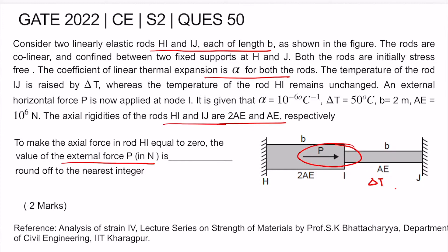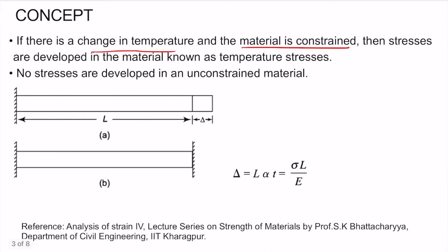Whenever there is a change in temperature and the material is constrained, stresses are developed in the material — these are known as temperature stresses. No stresses are developed in an unconstrained material. Suppose there is a bar of length L and we increase the temperature by delta T. Since the bar is unconstrained, there will be an increase in length. The deformation delta 1 will be equal to L times alpha times delta T. No stresses develop in this unconstrained case.